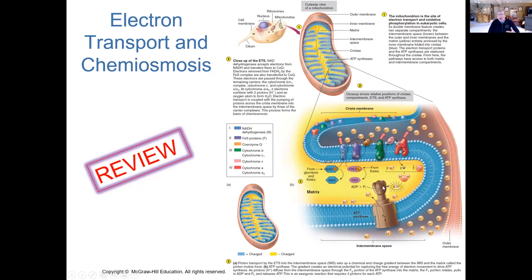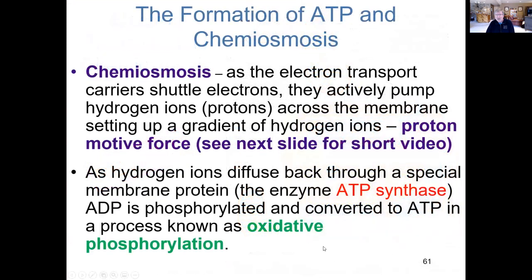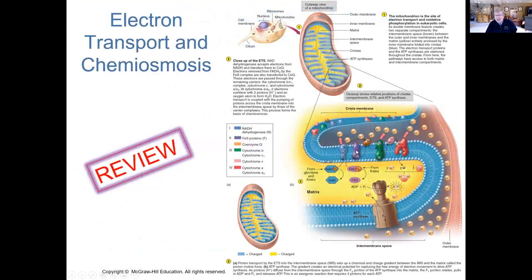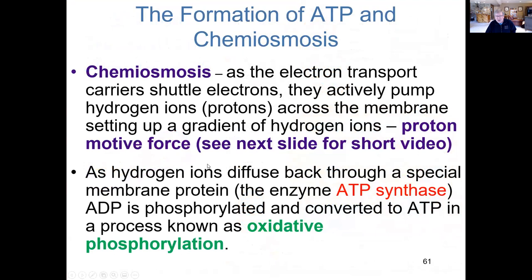Go back and watch the video again — it should make more sense now. The electron shuttling within the inner mitochondrial membrane powers the pumping of hydrogen ions into the intermembrane space — the proton motive force. Those hydrogen ions then diffuse back into the matrix through ATP synthase, driving ATP production.